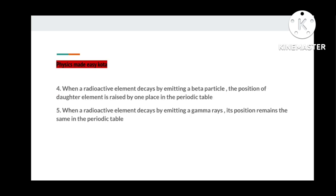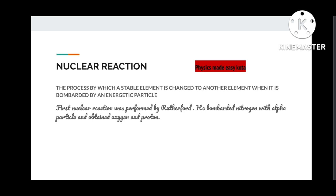When a radioactive element decays by emitting a beta particle, the position of the new formed element, which is known as the daughter element, is raised by one place in the periodic table. When a radioactive element decays by emitting gamma rays, its position remains the same in the periodic table. Whenever it decays by emitting an alpha particle, then the position of the daughter element is down by two places in the periodic table.